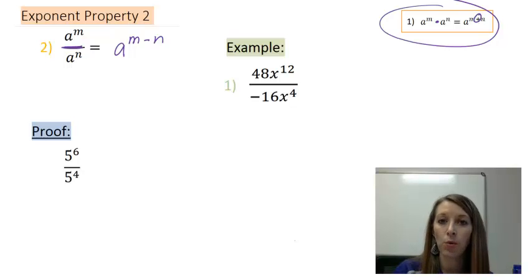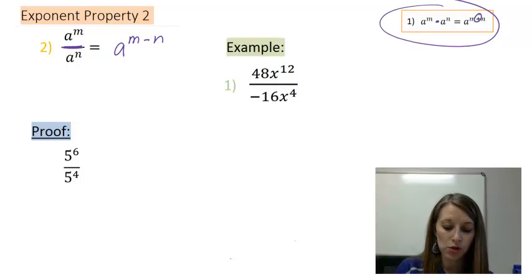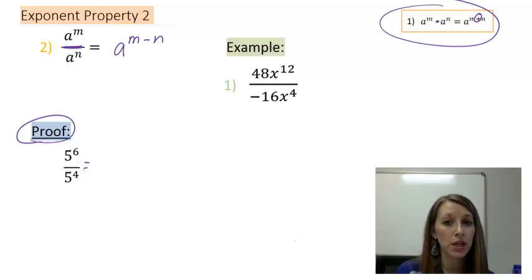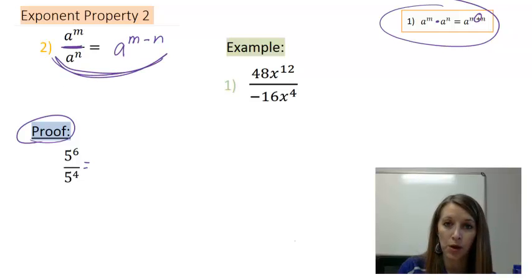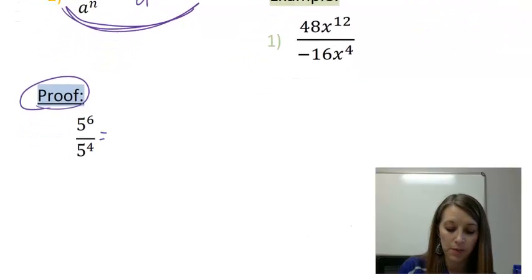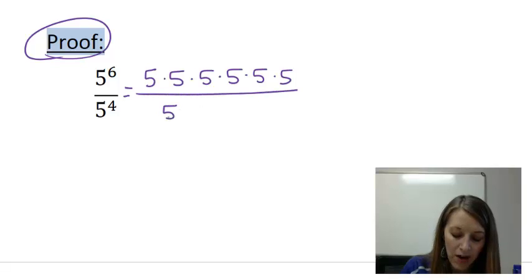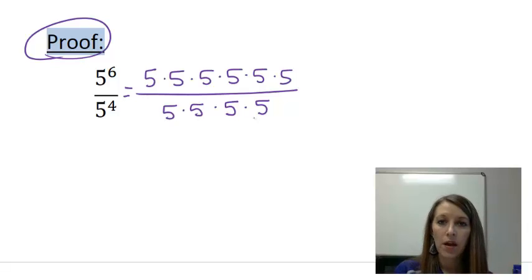Now again, you can just trust me that this property works or you can see me actually prove it to you. So moving down here to my proof, writing this out in long form, which again I don't expect you to do on the homework because that's why I'm introducing the properties in the first place. I'm just trying to explain to you why these work the way that they work. So five to the sixth power is five times itself six times, and five to the fourth power is five times itself four times.